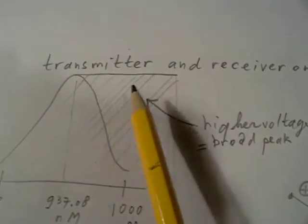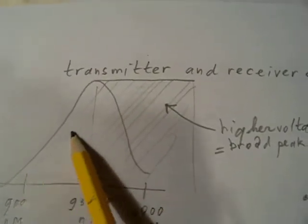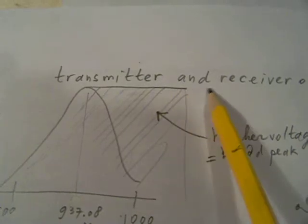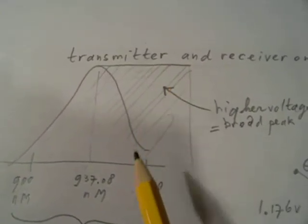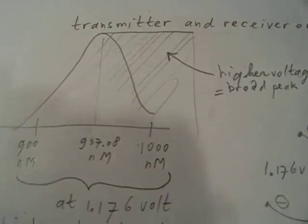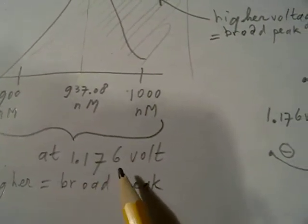So you get a broad peak here and my spectrophotometer didn't go further than 1000 nanometers. But it's very interesting to see that we have a very good and sharp peak on 1.176 volts.